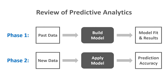We have two phases in predictive analytics. In phase one, we use our past data, build our model, and get our model fit and results. In phase two, we take new data from the same population, apply the model built in phase one, and assess prediction accuracy — where often our goal is to get the most accurate model.